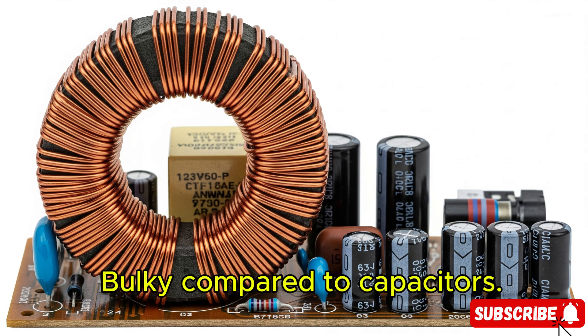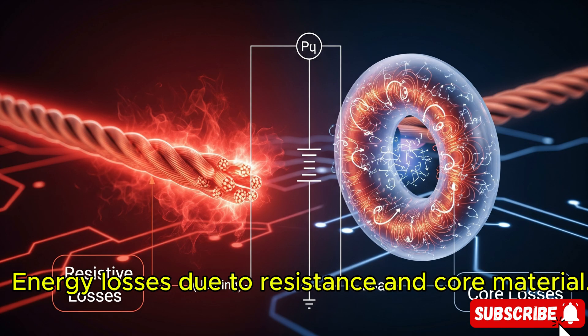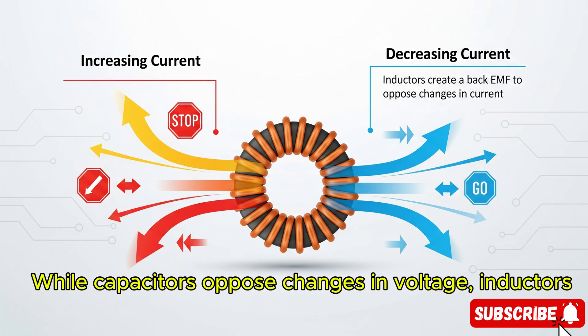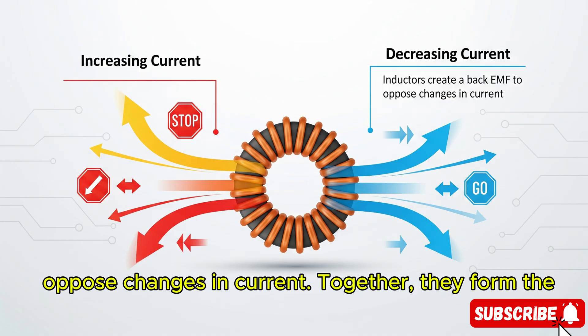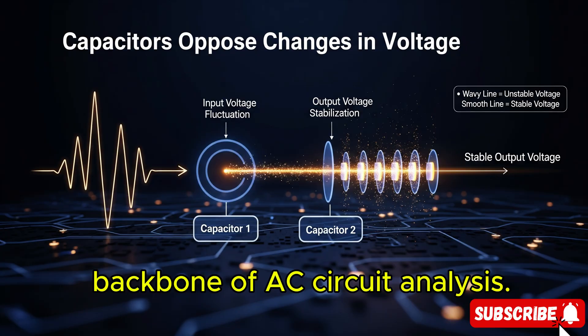However, they can be bulky with energy losses due to resistance and core material. While capacitors oppose changes in voltage, inductors oppose changes in current. Together, they form the backbone of AC circuit analysis.